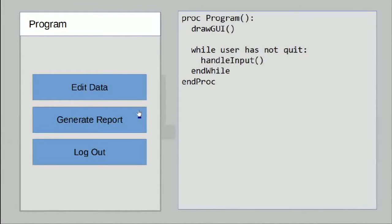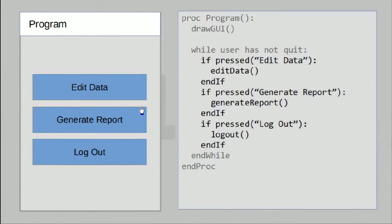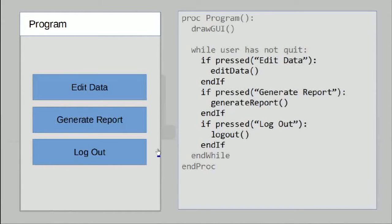The full implementation will probably look something like this: if a particular button has been pressed, run the function associated with that button. We have if statements repeated three times for each one of the buttons. That's how you implement an event loop.